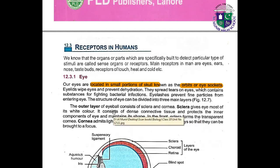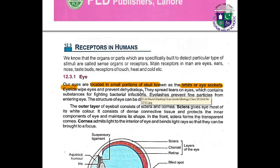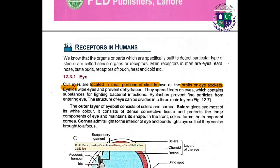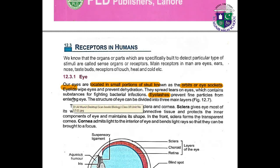Now, care and protection of the eyes. The eye is a sensitive organ. For care and protection, there are eyelids. Eyelids wipe the eyes and prevent dehydration, and they spread tears on the eyes which contain substances for fighting bacterial infections. Eyelashes prevent fine particles and dust from entering the eye.